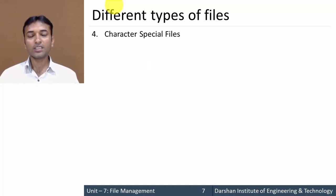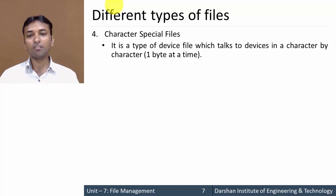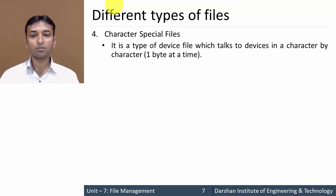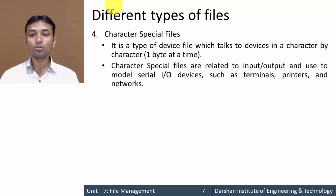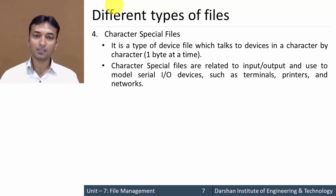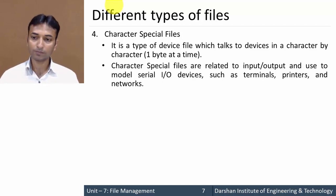The fourth type is character special file. It is a type of device file that communicates with devices character by character, that is one byte at a time. Character special files are related to input/output and are used to model serial output devices such as terminals, printers, and networks.